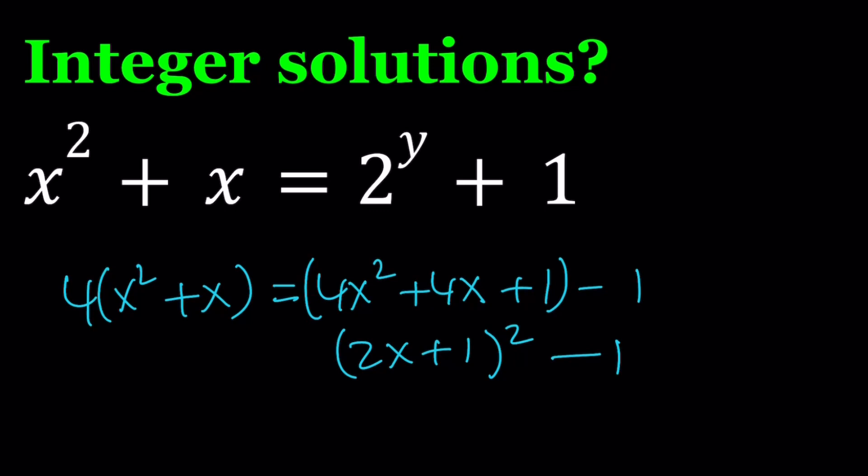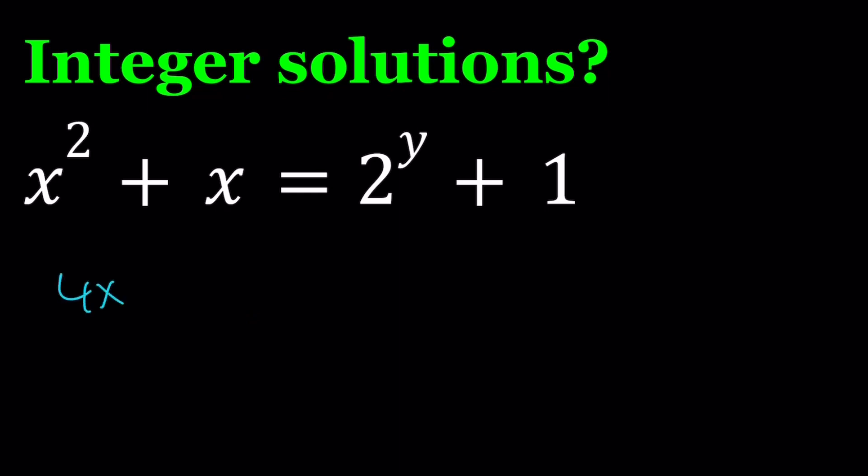So if you know these strategies, these techniques, then it will be easier for you to solve future problems. Now, let's see if we can apply this property here. Multiply everything by 4, then you're going to get 4x squared plus 4x. And then the right-hand side is going to be 4 times 2 to the y plus 4. And then by adding 1 to both sides, you're going to get 4x squared plus 4x plus 1.